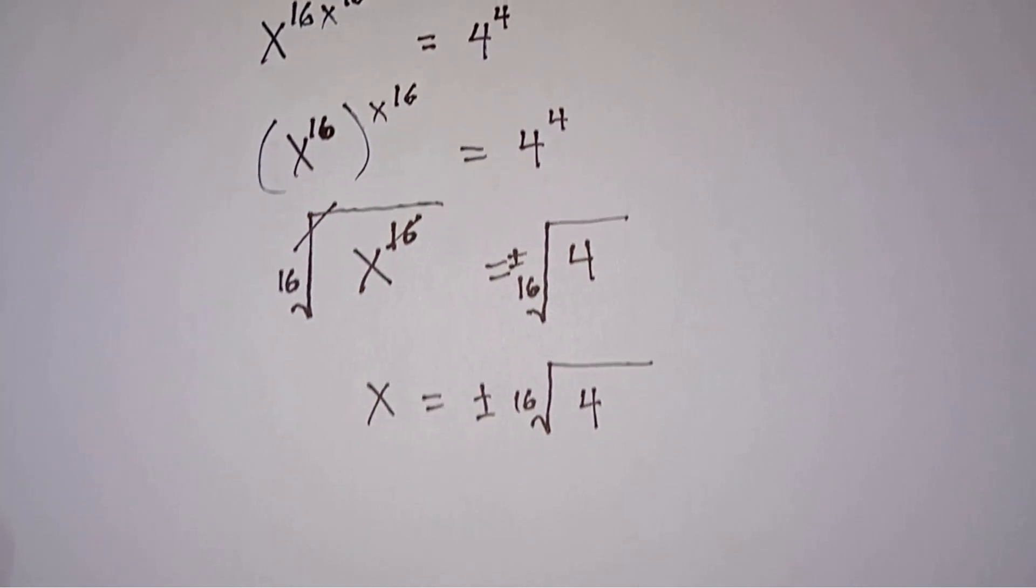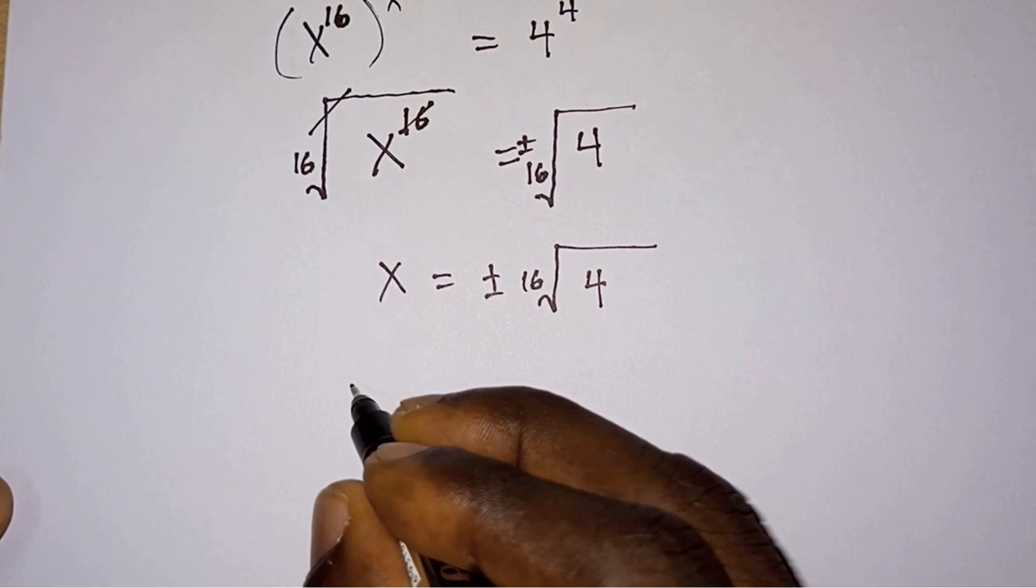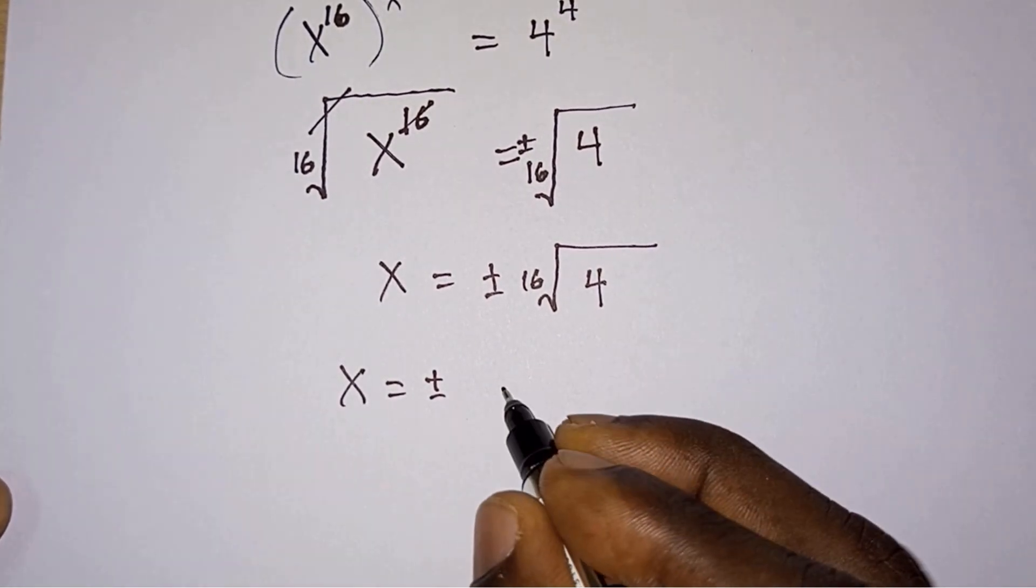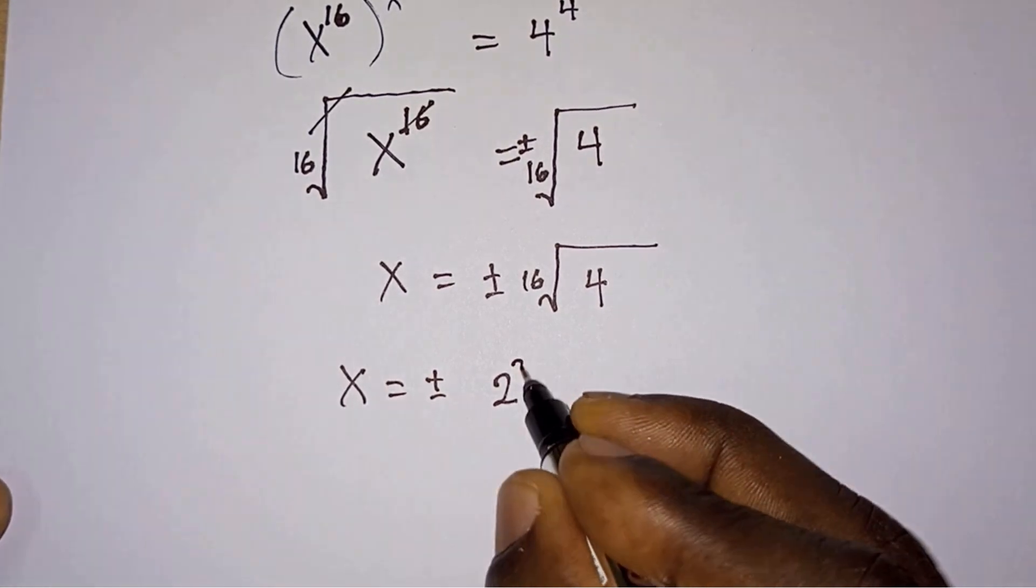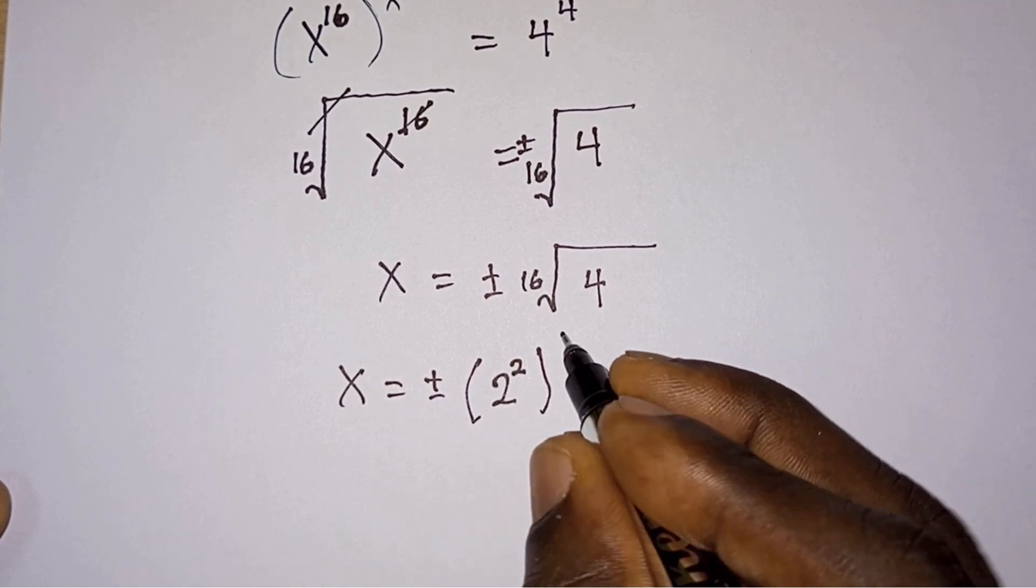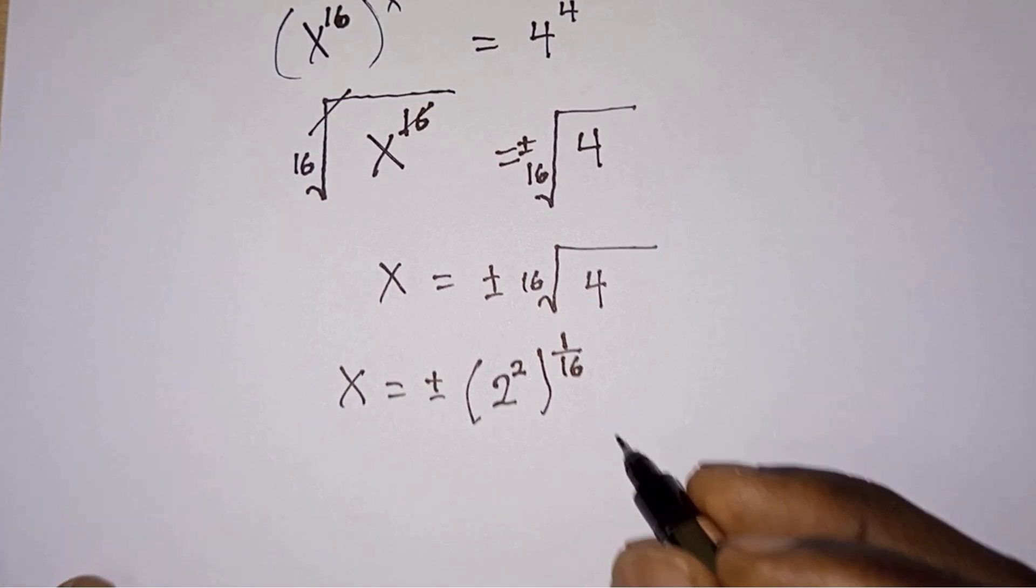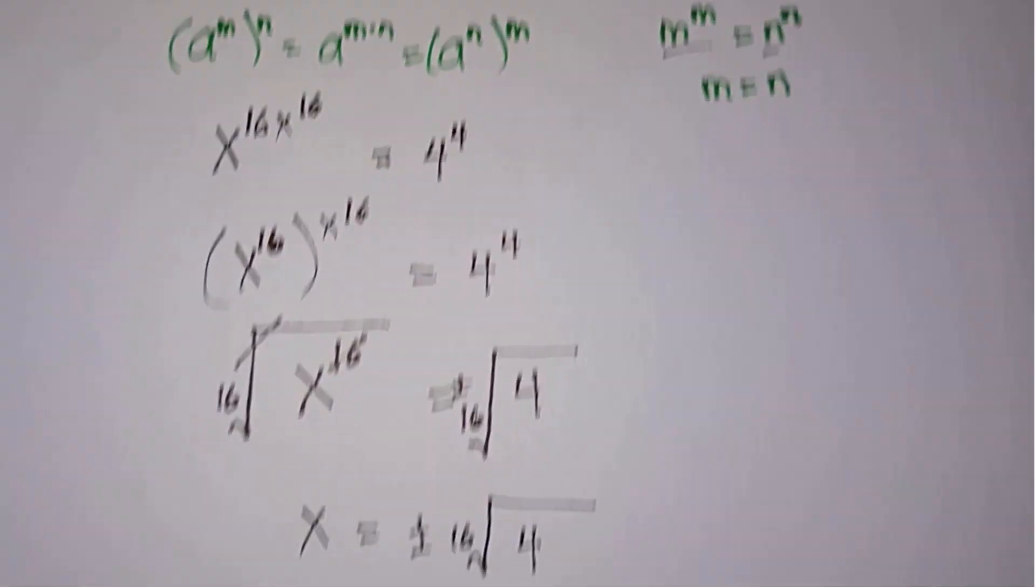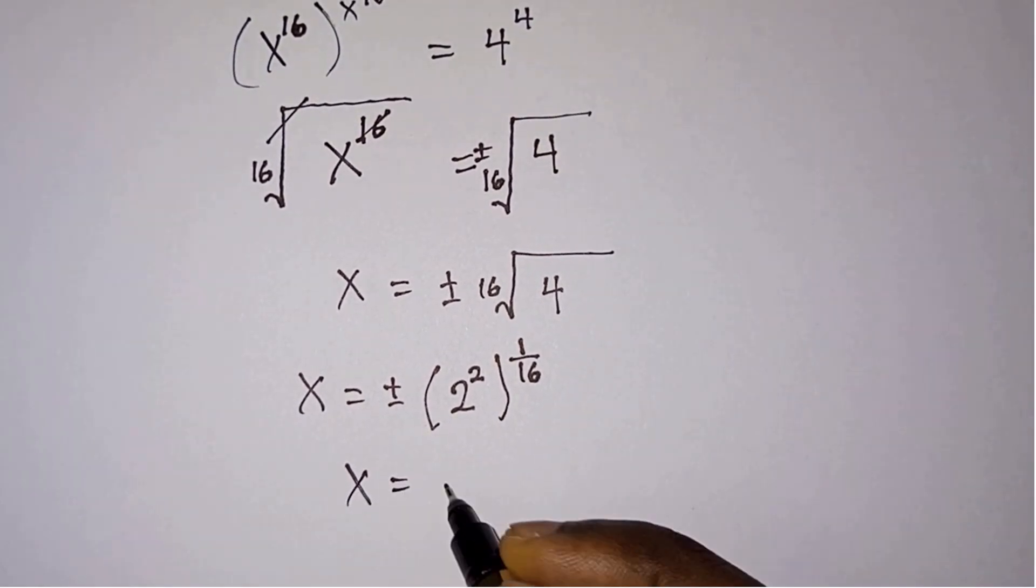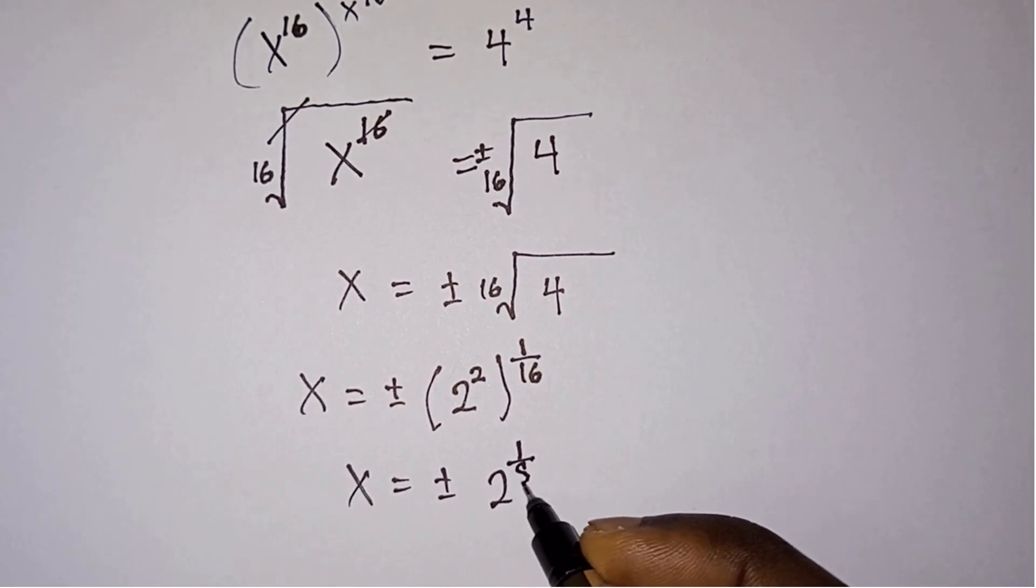But guess what? We are not going to end here because I don't want people to lash me in the comment section. We can break this down. We have x is equal to plus or minus, 4 could be written as 2 to the power 2. Then 16 root is the same as 1 divided by 16. And then we will still apply the power rule over here. So we would have 2 times 1 over 16, which is the same as x is equal to plus or minus 2 to the power 1 over 8.